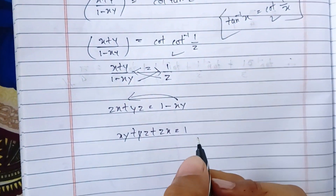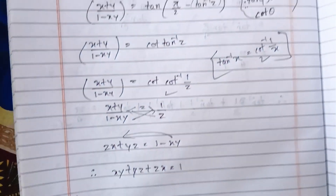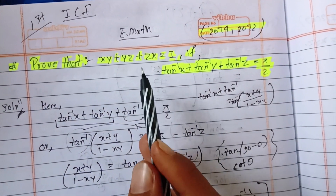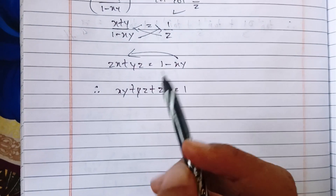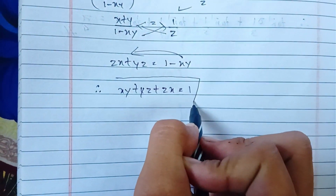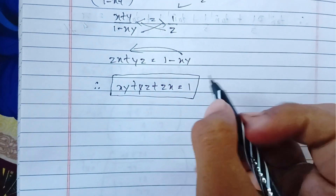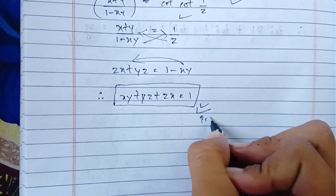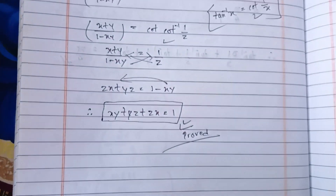Therefore, xy + yz + zx = 1. This completes the proof. So xy + yz + zx equals 1.